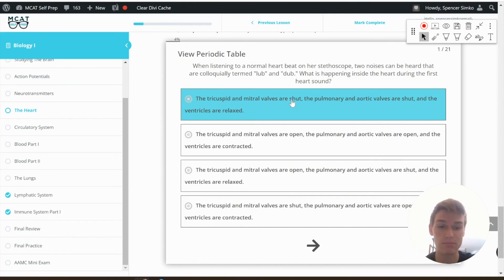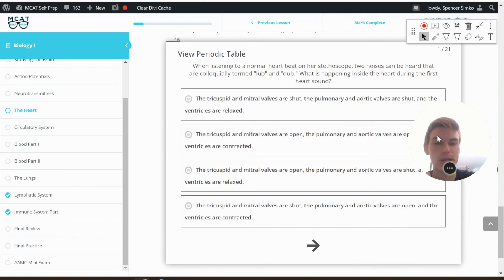The tricuspid and mitral valves are shut. That does make sense. The pulmonary and aortic valves are open. That does make sense, because we need blood to be flowing out of the ventricles, and the ventricles are contracted. That's exactly what's happening here.